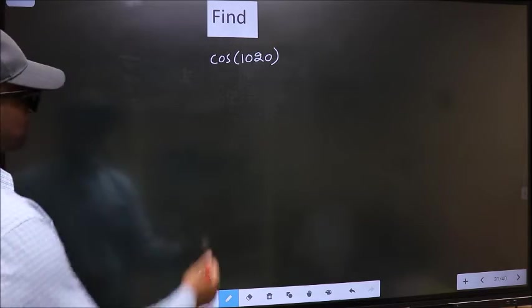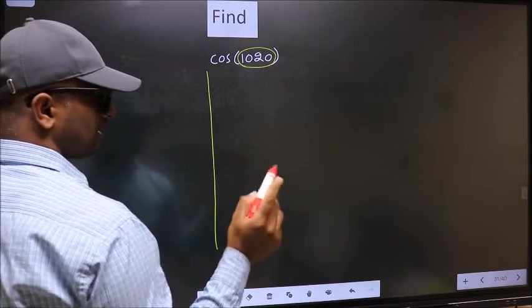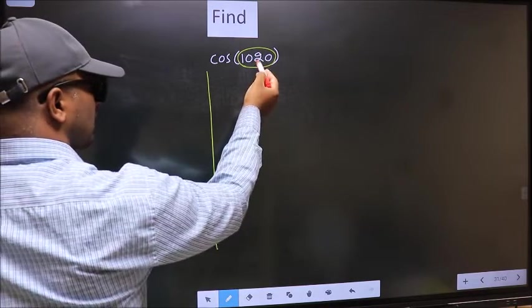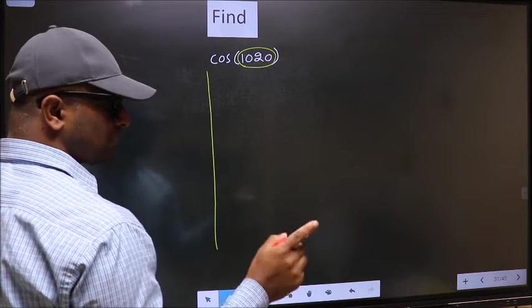See, here we have 1020. Now you should check, 1020 lies between which two multiples of 180.